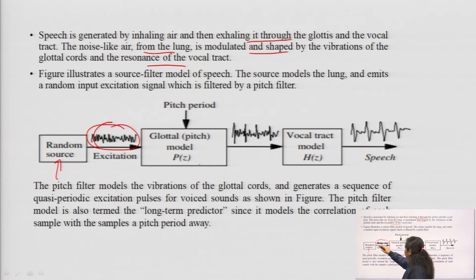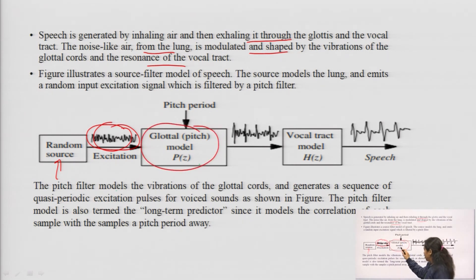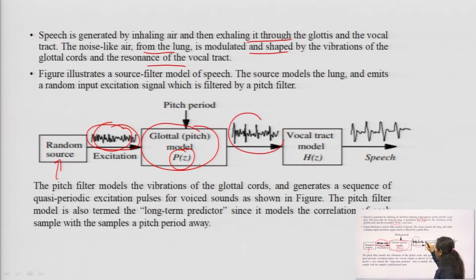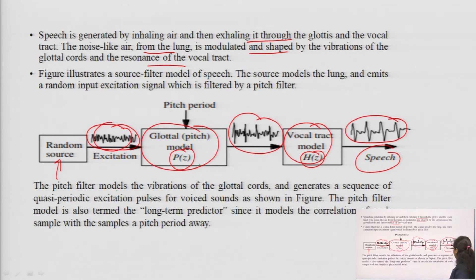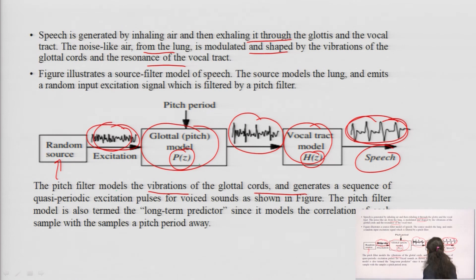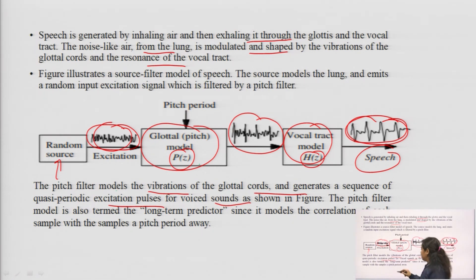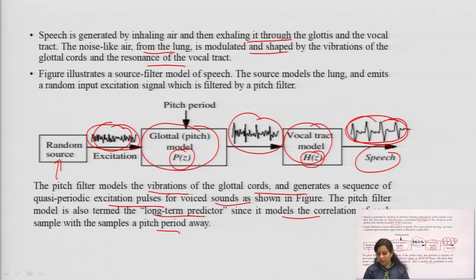The random source generates a continuously varying signal that acts as excitation to the glottal or pitch model. A pitch period is applied, the amplitude is increased, and then it is applied to a vocal tract model with transfer function H(Z), producing the speech signal. The pitch filter model models the vibrations of glottal chords and generates a sequence of quasi-periodic excitation pulses for the voiced sound. The pitch filter is also termed a long-term predictor, since it models the correlation of each sample with a sample one pitch period away.